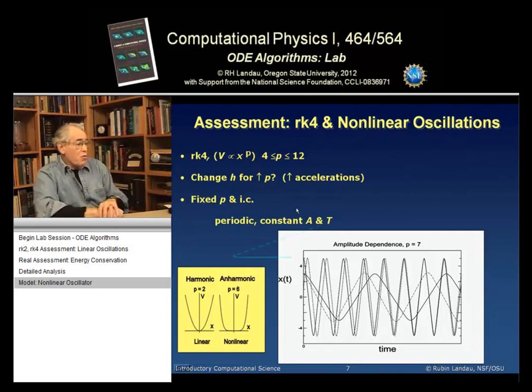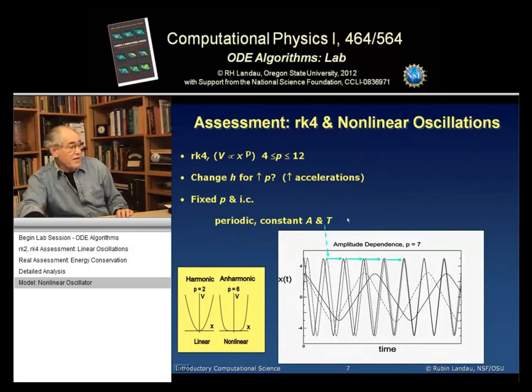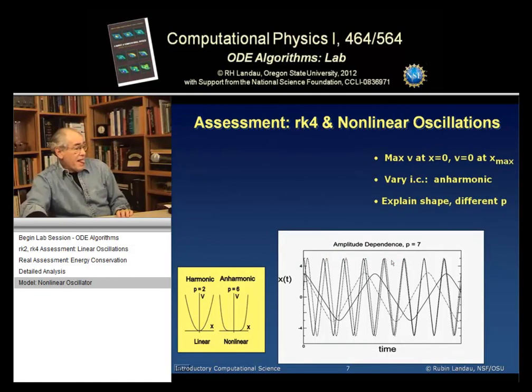Then, for any one p value, keep the power constant and vary the initial conditions. And what should you see? Well, first, you should see that the period T is constant. So if you look at the graph here, this is a graph of several motions. You should see that the amplitude is constant. There's no friction. This is not simple harmonic motion. But you see the amplitude stays constant. And the period, the time between the bumps, stays constant.